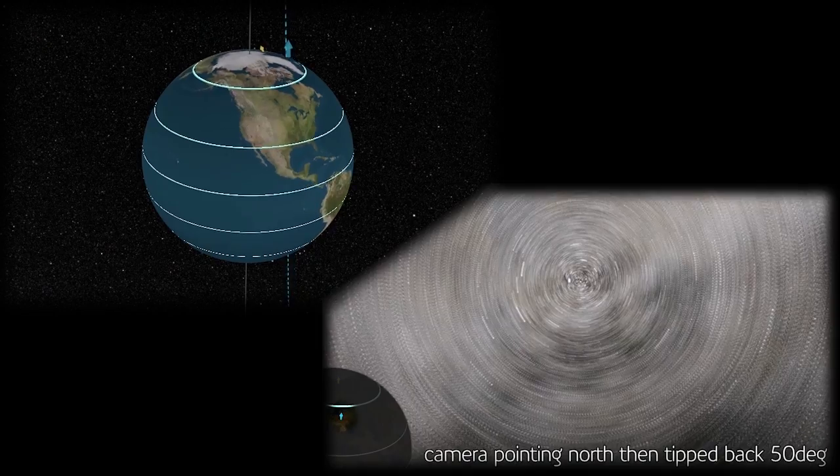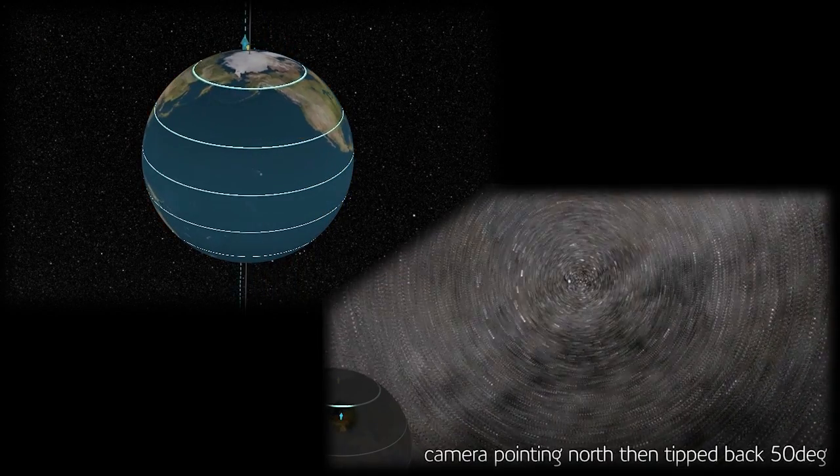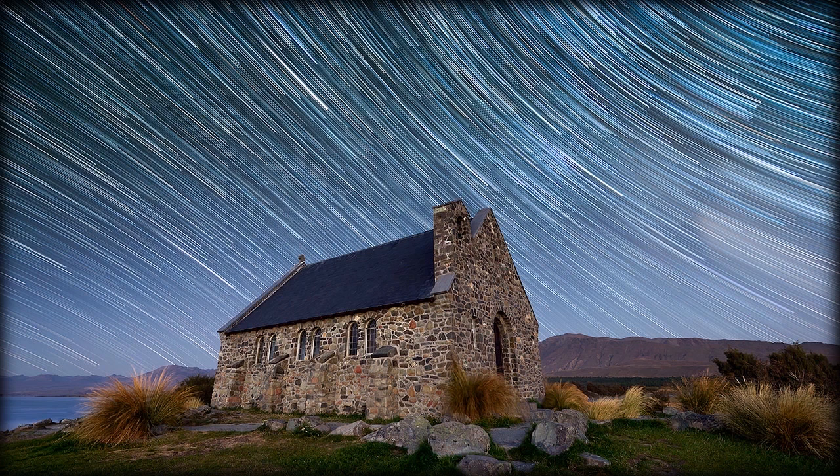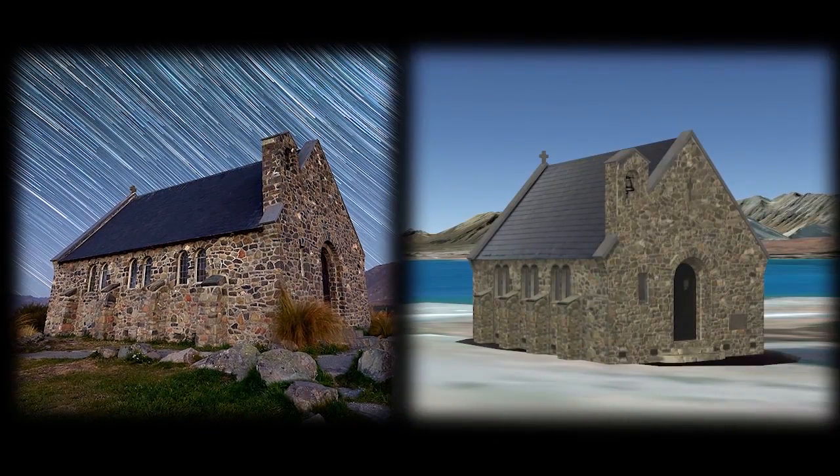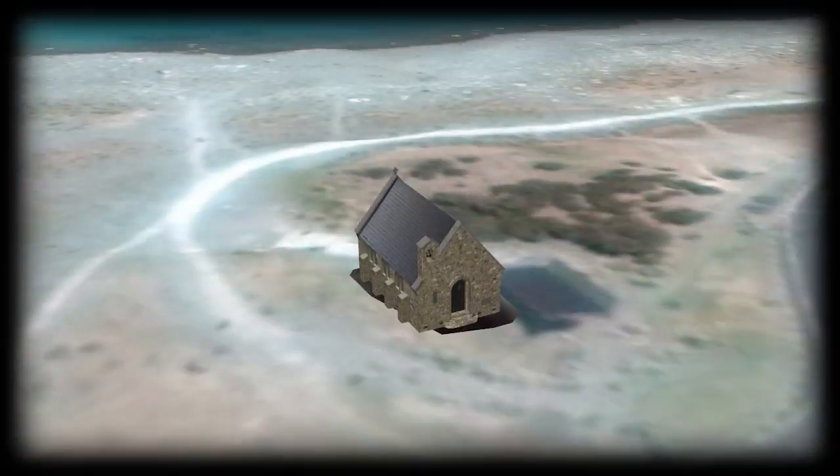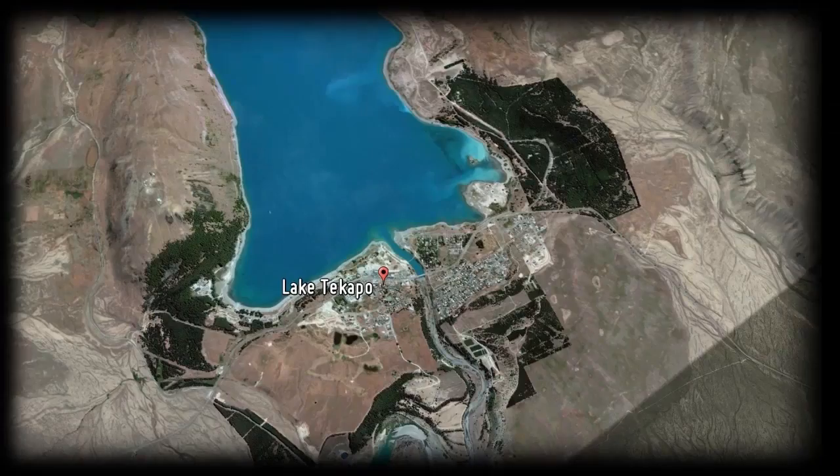Now time to find some photos and see if we can simulate the star trails. First I've got a photo of a famous church at Lake Tekapo in South Canterbury, New Zealand. Famous enough that there is a 3D model of it on Google Earth, so we can use that to find exactly where and in which direction the photo was taken.